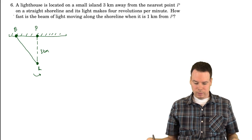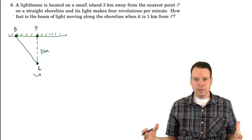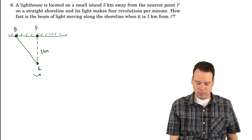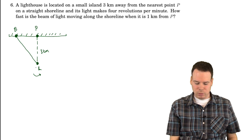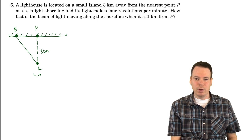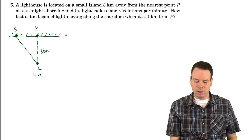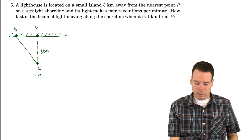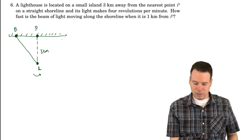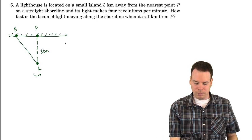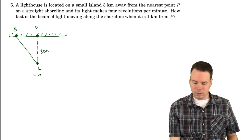Due to the fact that this is a related rates problem, things are moving. The light is moving, so the beam of light is moving, and this point B is moving along the shoreline. What I'd like to do is try to figure out what kind of quantities I should have in this diagram to talk about the things that are moving.